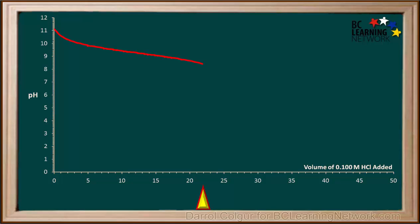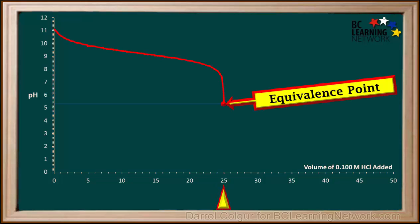As we go from 22 ml to 25 ml of HCl added, the buffer solution is overcome and the pH falls steeply. At 25 ml of HCl added, we have reached the equivalence point of this titration.